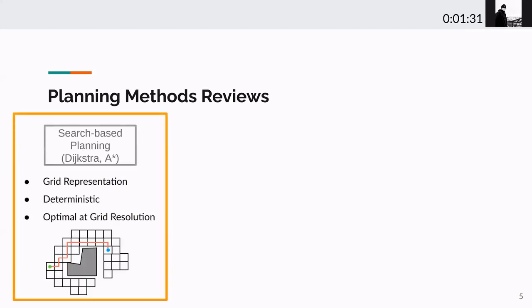Search-based planners like Dijkstra and A-STAR usually use a discretized world representation like a grid map. When the planners search for a path, they propagate through the grid, then report the best path deterministically.